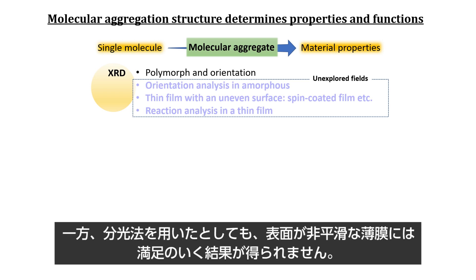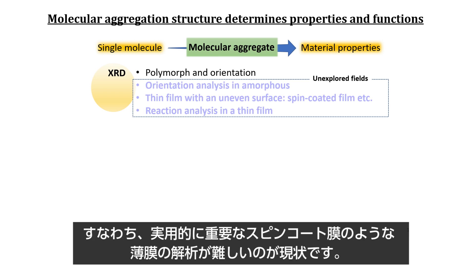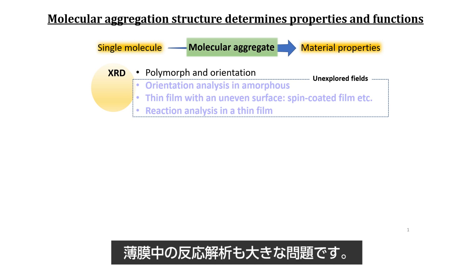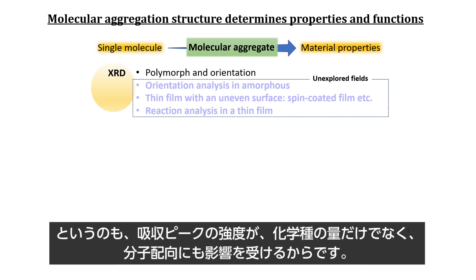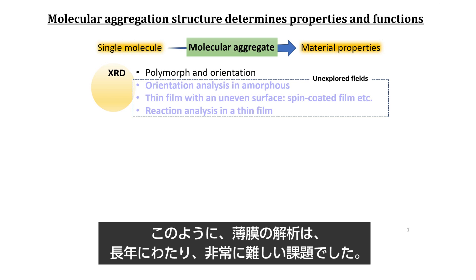Even when a spectroscopic technique is employed, unsatisfactory results are obtained for a thin film having an uneven surface. This limits the analysis of practically important films represented by spin-coated films. Reaction analysis in thin film is another big matter because the peak intensity depends on both the quantity of chemical species and the molecular orientations. In this manner, analysis of a thin film has long been a very difficult matter.